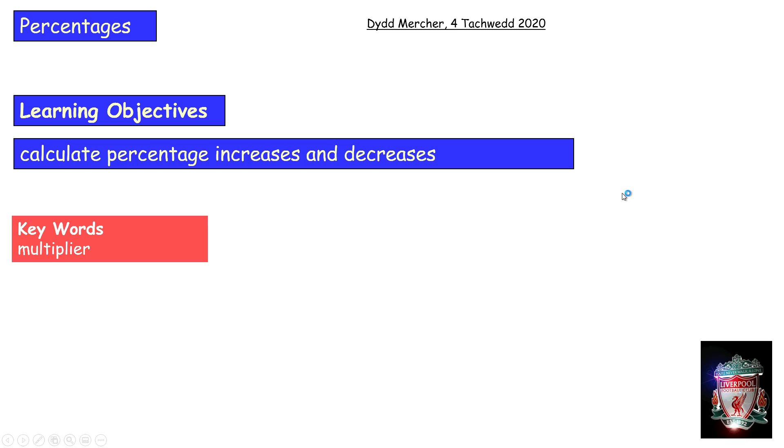Percentages. We're calculating percentage increase and decrease. Hit pause, get your headings down, and when you're ready to move on, hit play again. We'll move on to the starter.